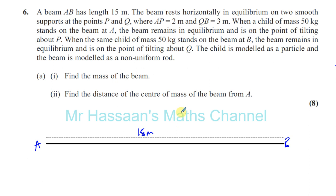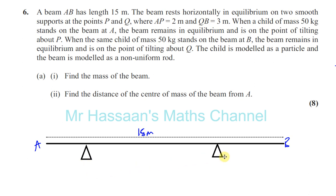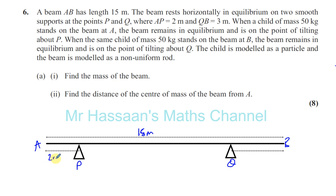The beam rests horizontally in equilibrium on two smooth supports at the points P and Q. So let's draw the supports in, P and Q. It says AP is 2 meters and QB is 3 meters. It's just a rough diagram. So here you have P and here you have Q. This is 2 meters and this is 3 meters.